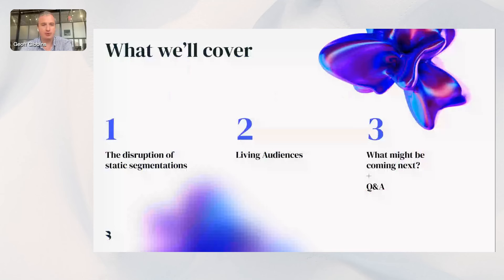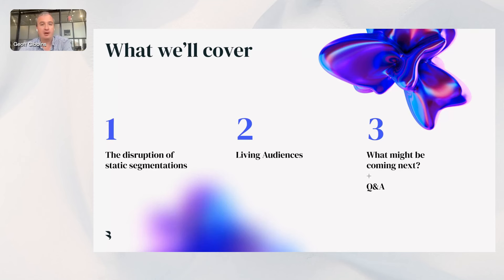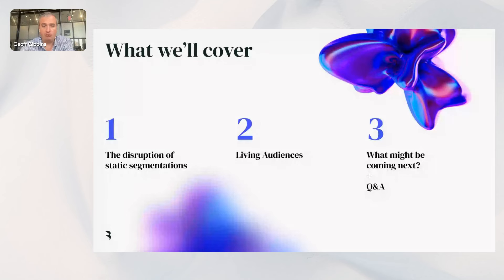We will dig into it now. We're going to go through a few things. First, we'll start with how we see the disruption of static segmentations and what that means. We're going to get into what we call living audiences — a new approach we've been deploying with a number of our clients at Board of Innovation — and talk about what they are, how they work, the benefits, and how you can put them into practice whether you have an existing segmentation or not. We'll also talk about future applications. Please feel free to chime in with questions in the chat — I'll try to address them as we go, but we'll have time at the end as well.